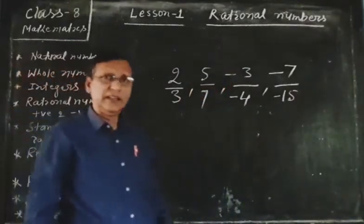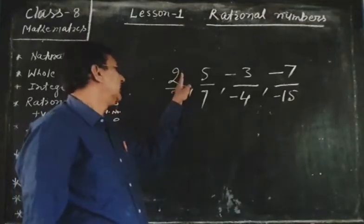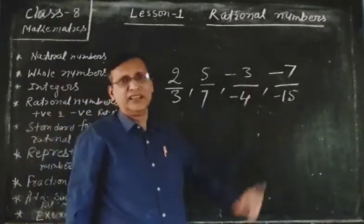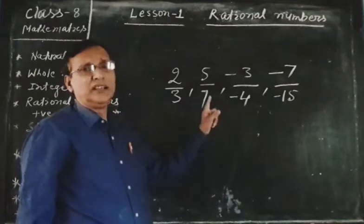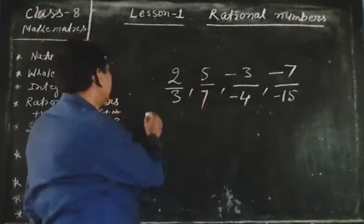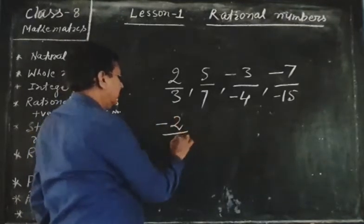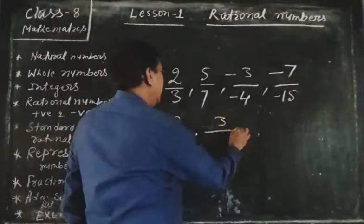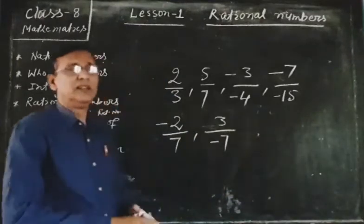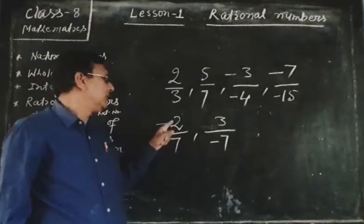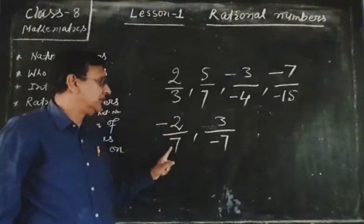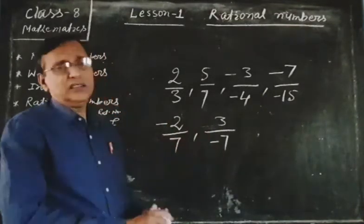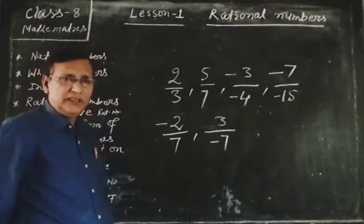These are examples of rational numbers. If the numerator and denominator are both positive or both negative, the rational number is called a positive rational number. If one of them is negative and the other is positive, the rational number is called a negative rational number.